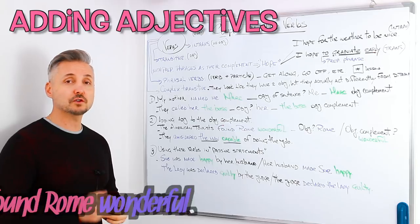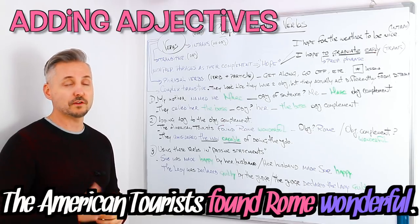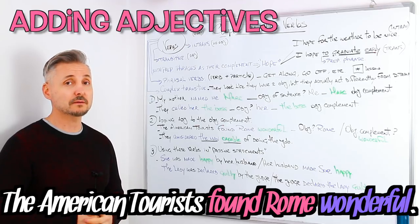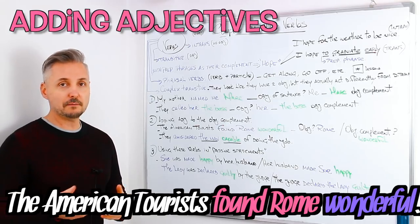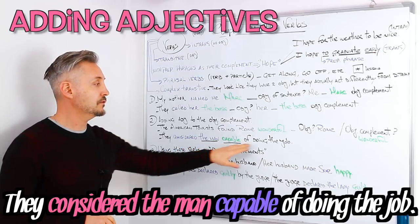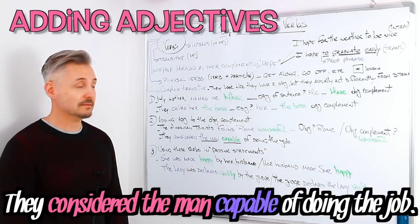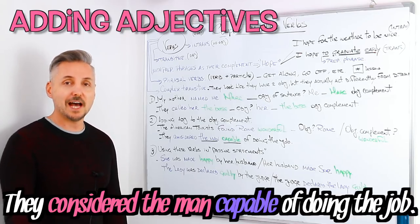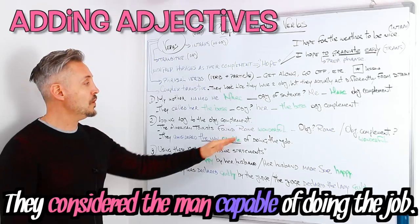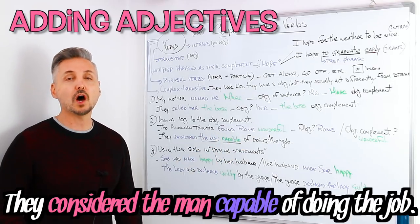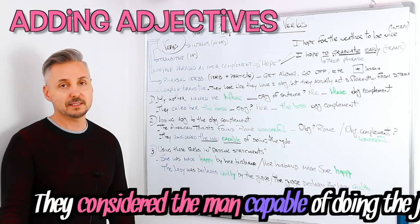For example, the American tourists found Rome wonderful. What's the object? Rome. The object complement? Wonderful. Another example: they considered the man capable of doing the job. What's the object? The man. What's the object complement? Capable. So we have two adjectives here — wonderful and capable — that could be object complements of a sentence.